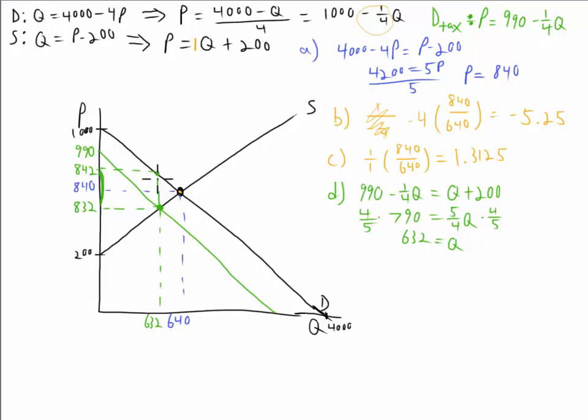So you see that buyers are paying $2 of the tax, and sellers are paying $8 of the tax. So buyers pay an extra $2 out of the 10, so they get a 20% share. And we know that shares have to add up to 100%, so 80% is paid by the sellers.